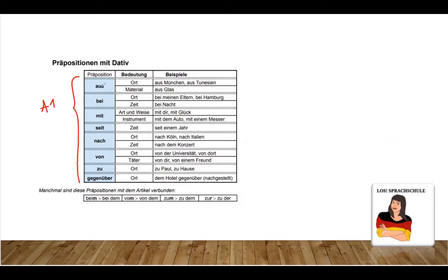First one is aus. Aus, we can say from in English. We can be from somewhere, so we need a location. Aus München. Aus Tunisien. From Munich. From Tunisia. I am from somewhere, or I call from somewhere or many other combinations. Another one is the material. For example, aus Glas, out of or from glass.